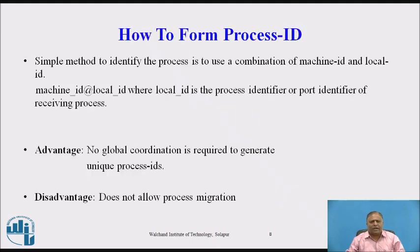How to form a process ID. A simple method to identify the process is to use a combination of machine ID and local ID. The syntax is machine_id@local_id, where local ID is the process identifier or port identifier of the receiving process. This method is used in Berkeley Unix with a 32-bit internet address for machine ID and a 16-bit number for local ID. Advantage: no global coordination is required to generate unique process IDs. However, this approach does not allow process migration.